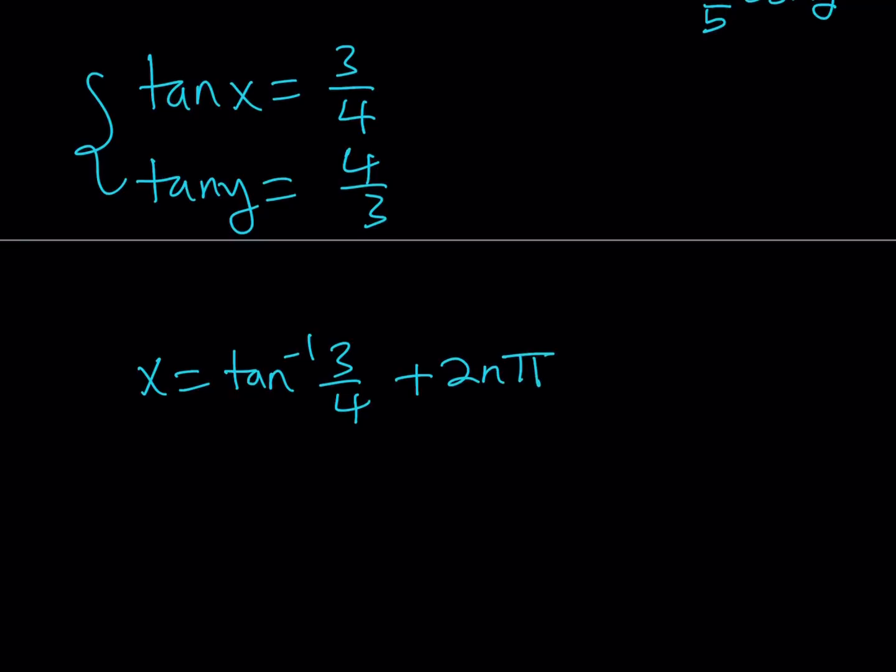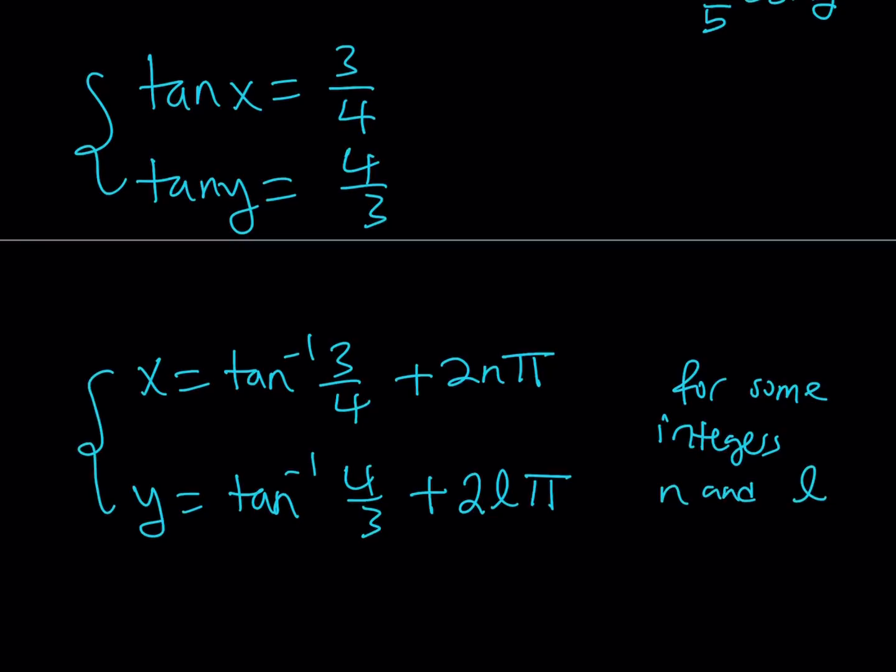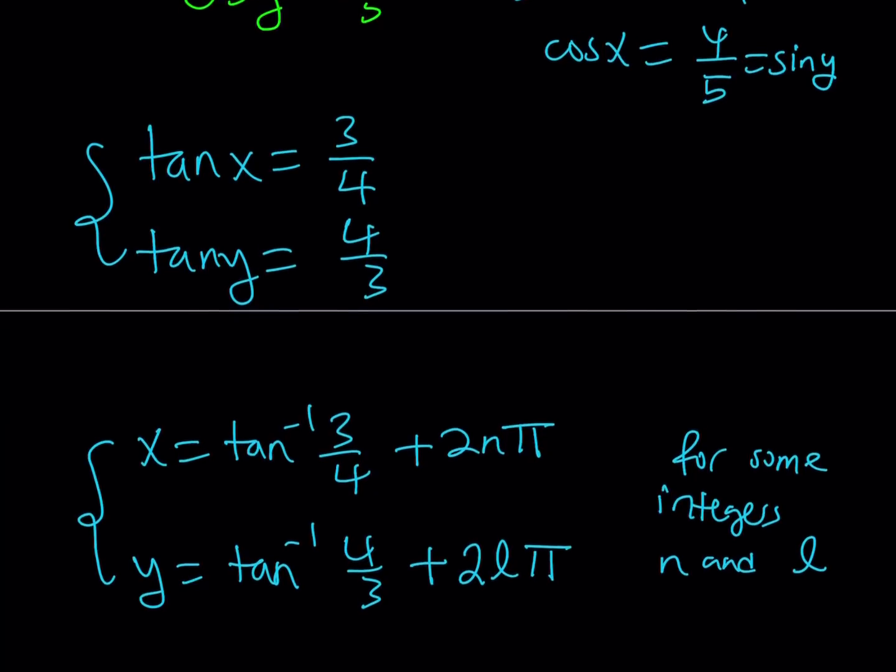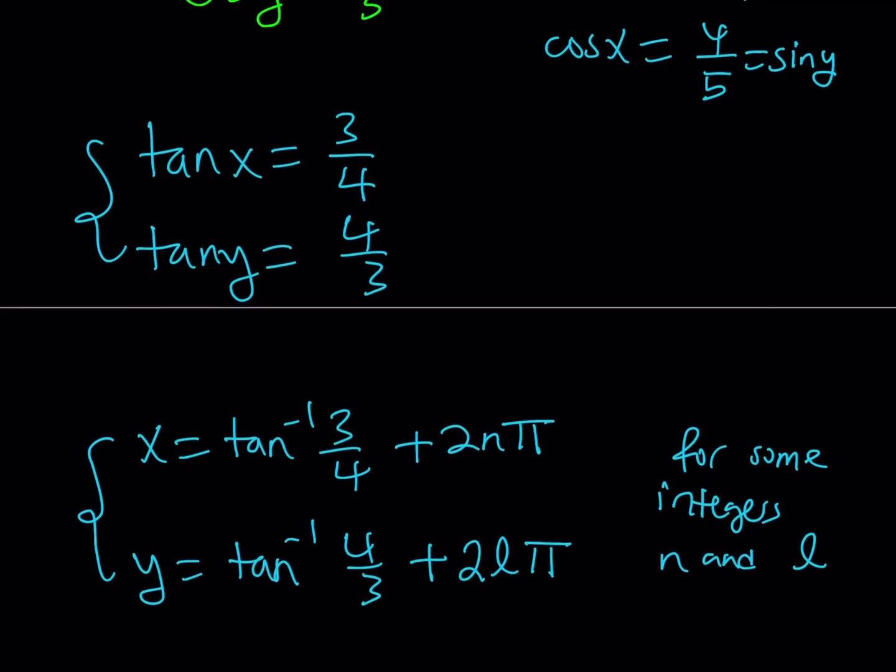So let's add 2 n pi to it, and then y can be written as tan inverse of 4 thirds, and then we can again add multiples of 2 pi to it and let's write it as 2 l pi, where n and l are integers. So for some integers n and l, this is going to be true and that's basically going to give us all the solutions to this system.